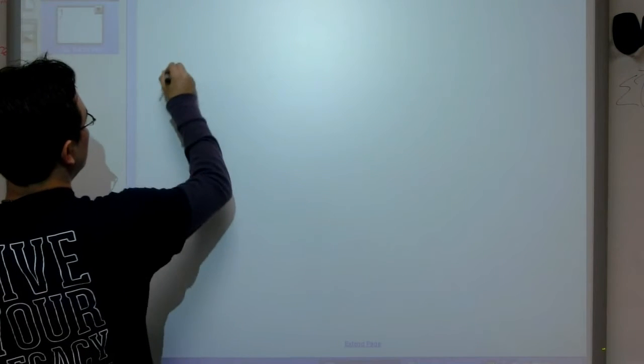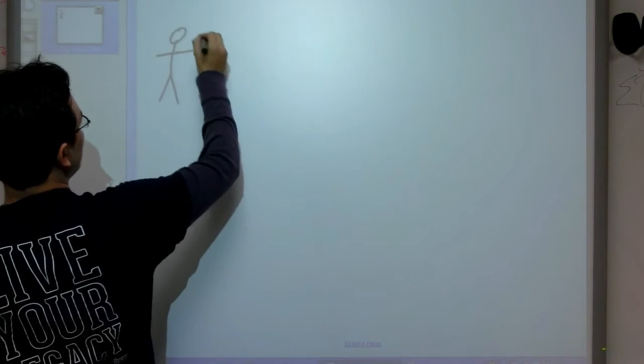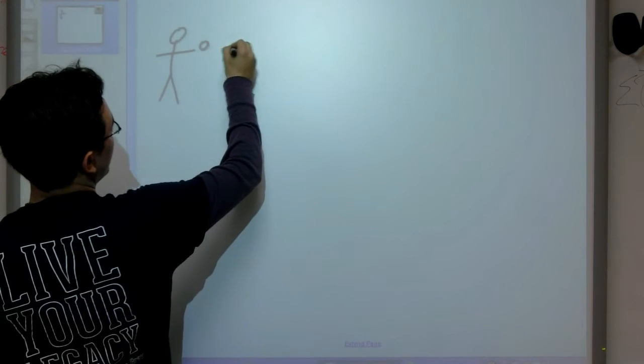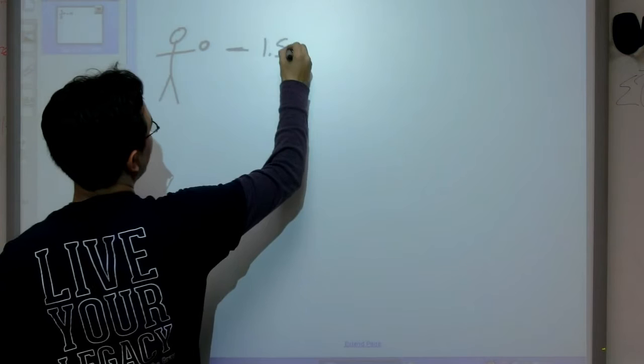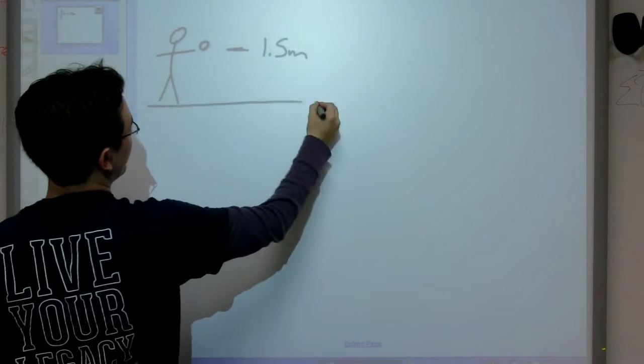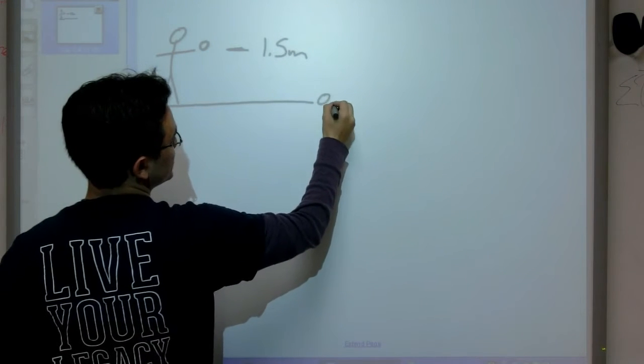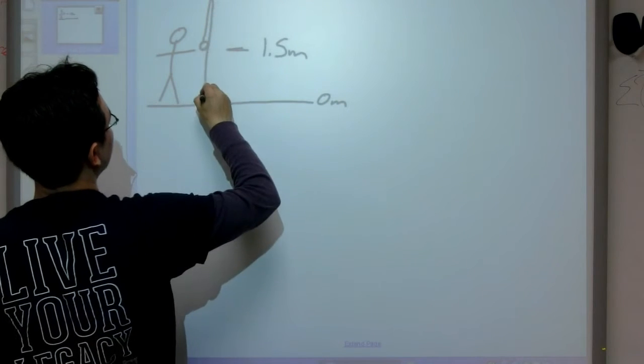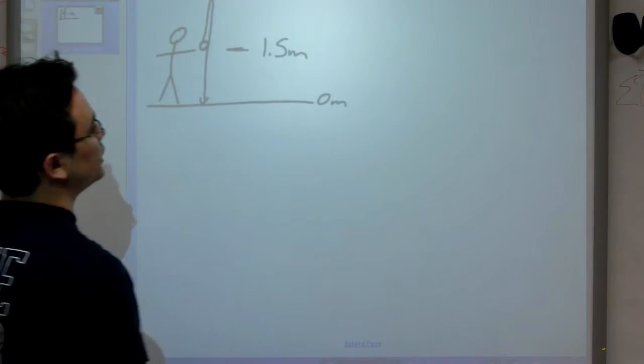So we've got me here holding the tennis ball, and I throw it up in the air at a height of about 1.5 meters above the ground, which this guy is at 0 meters. It's going to go up in the air and then fall back down, because I've given it an initial velocity.